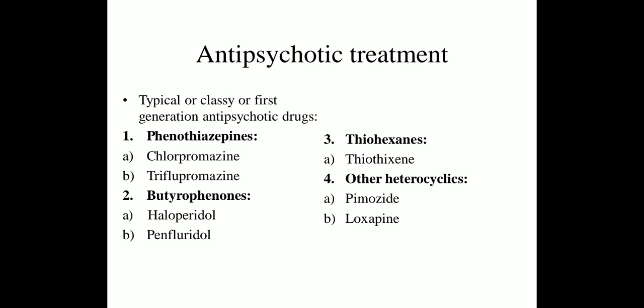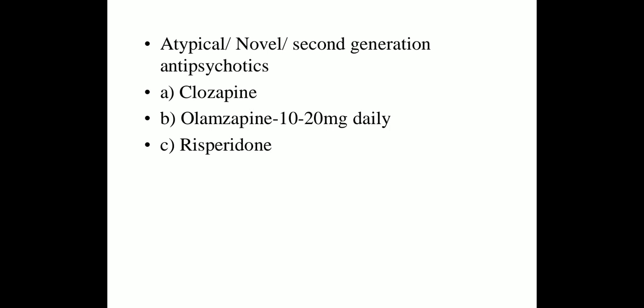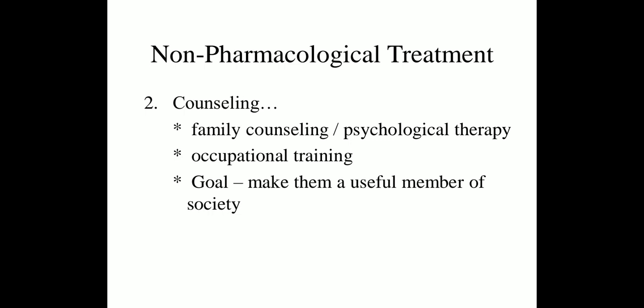The antipsychotic treatment classes include, first, the phenothiazines such as chlorpromazine and trifluoperazine, along with some remaining drug classes which are useful in schizophrenic patients — you have to memorize this classification. The atypical novel second-generation antipsychotics include clozapine, olanzapine at 10 to 20 mg daily, and risperidone. Non-pharmacological treatment includes proper counseling, family counseling, psychological therapy, and occupational training, which are useful to benefit the schizophrenic patient.